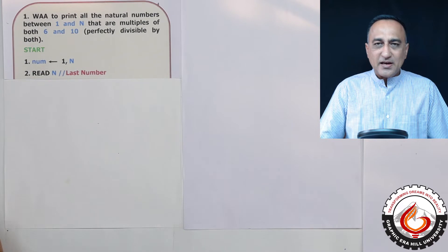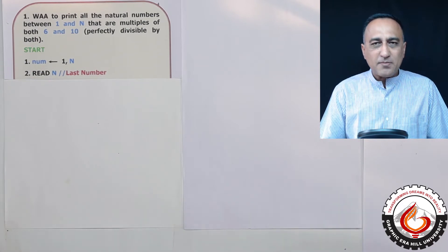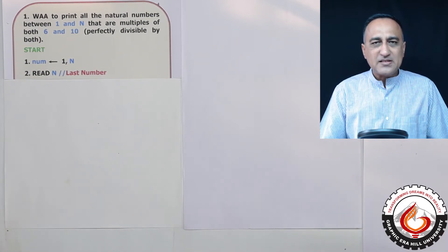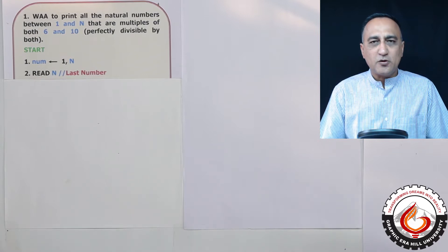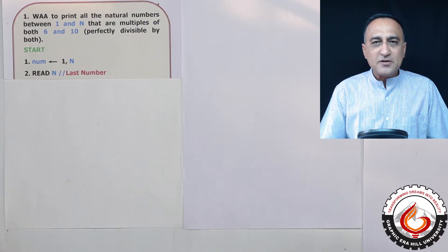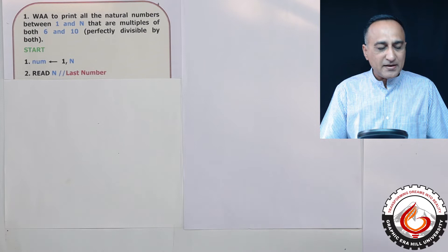What it really means is if you start with number one, divide it by 6 and divide it by 10. If the remainder happens to be zero, print that number.